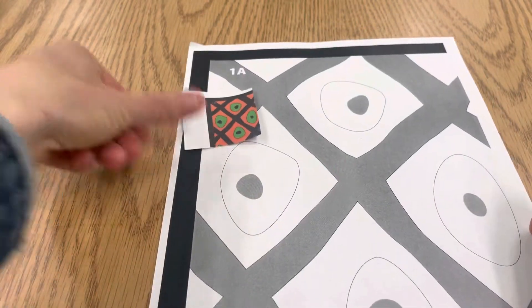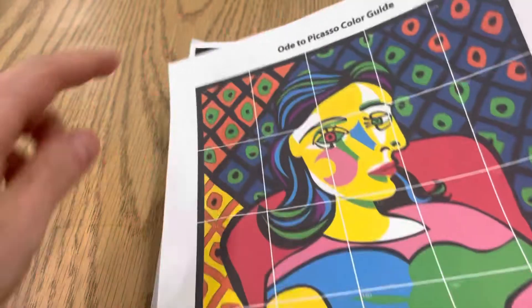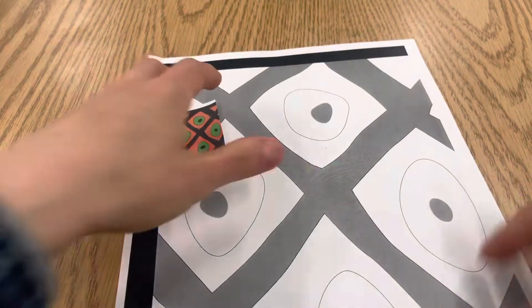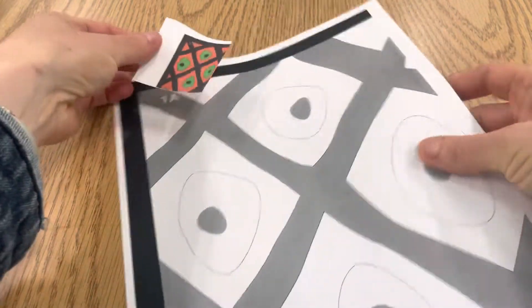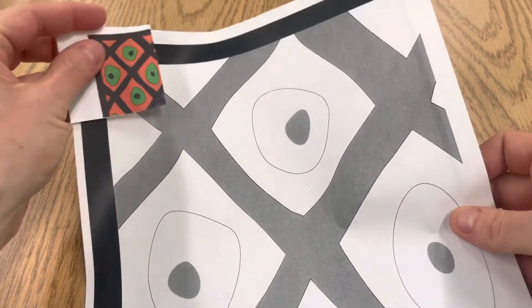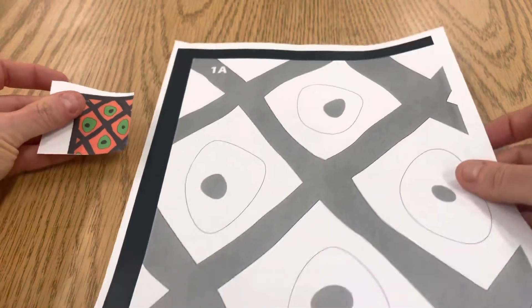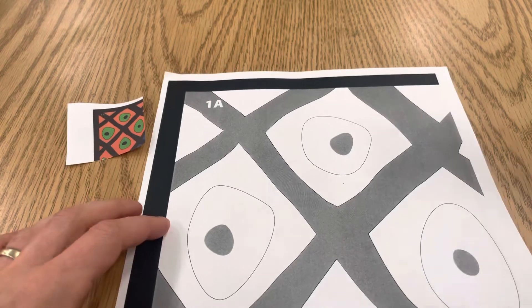This is piece 1A, which is this piece up here. You might get piece 1A with a little piece stapled to it so you know how to color it. Your first step is to outline.